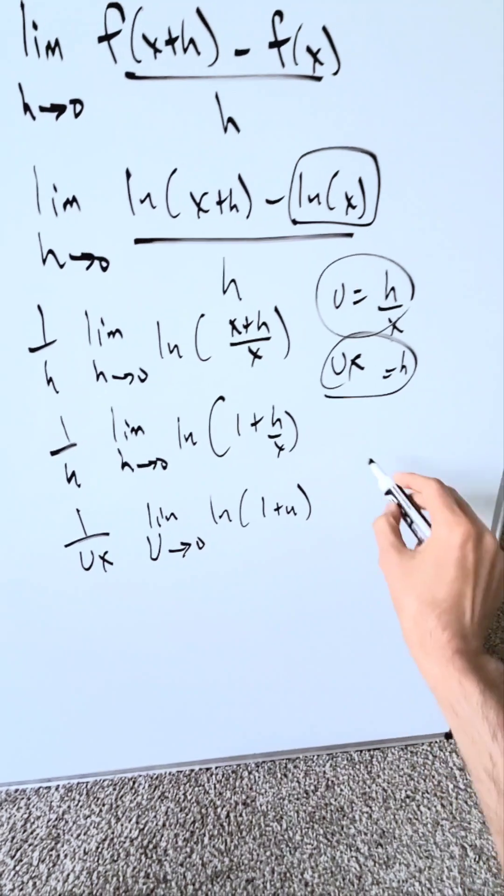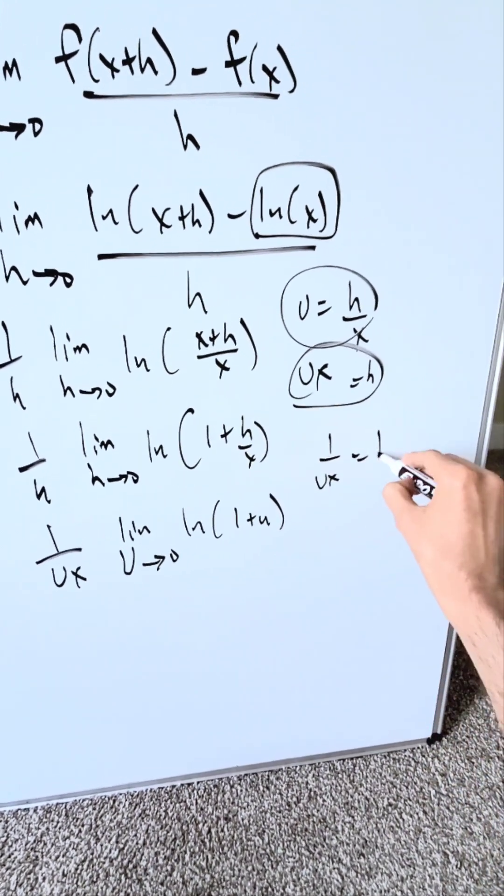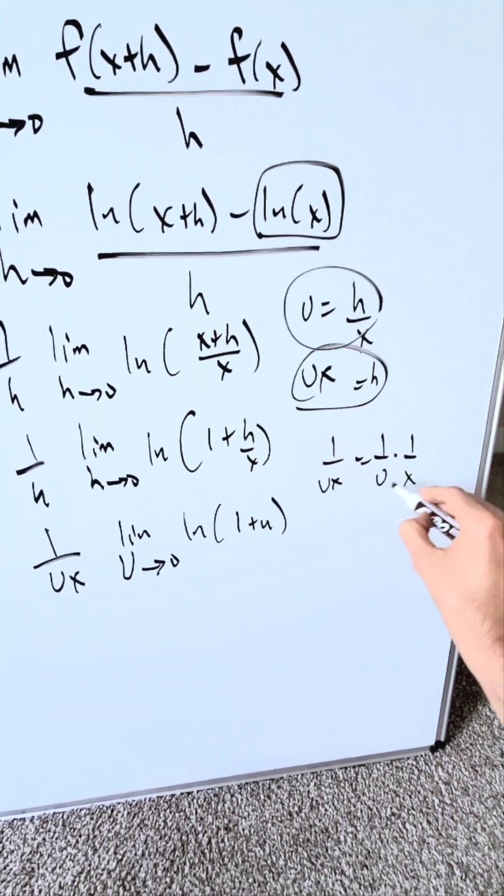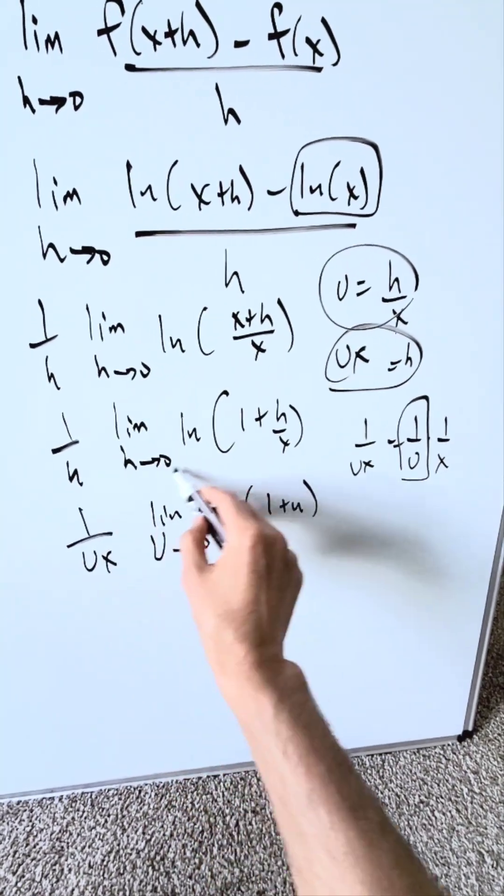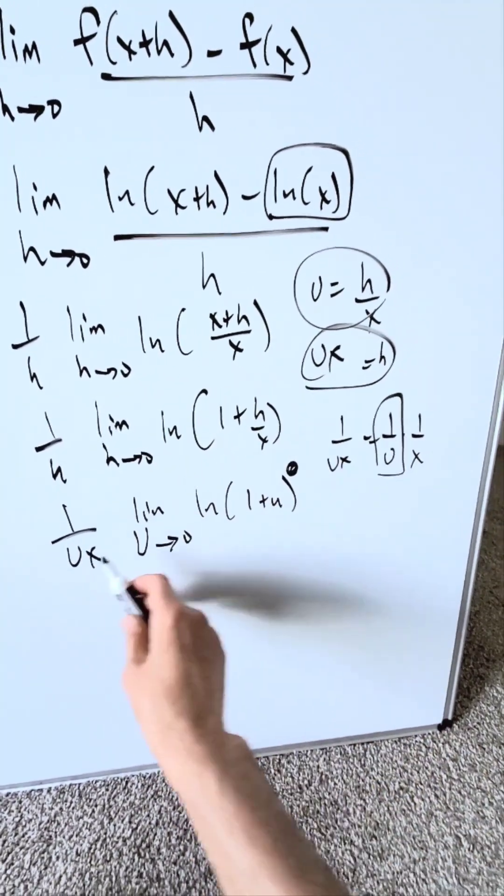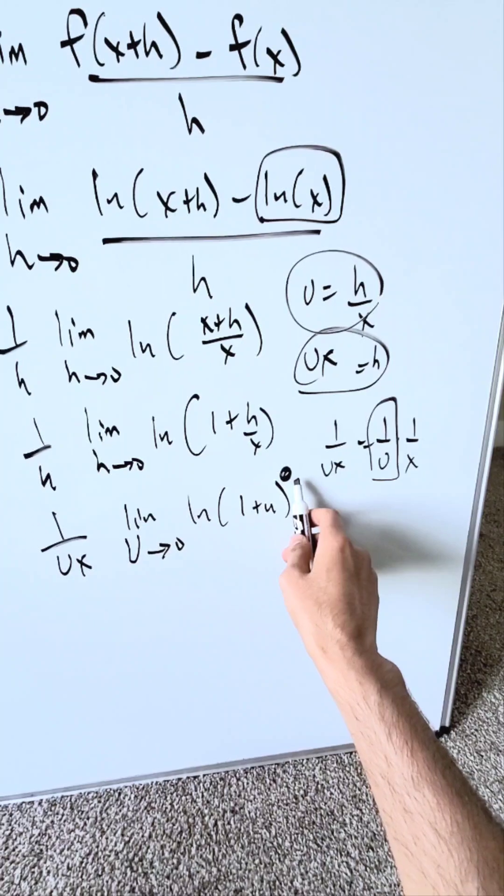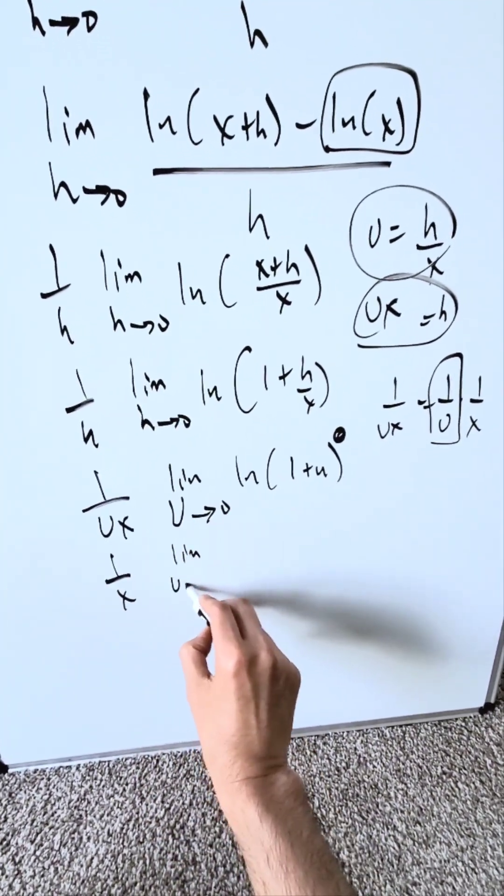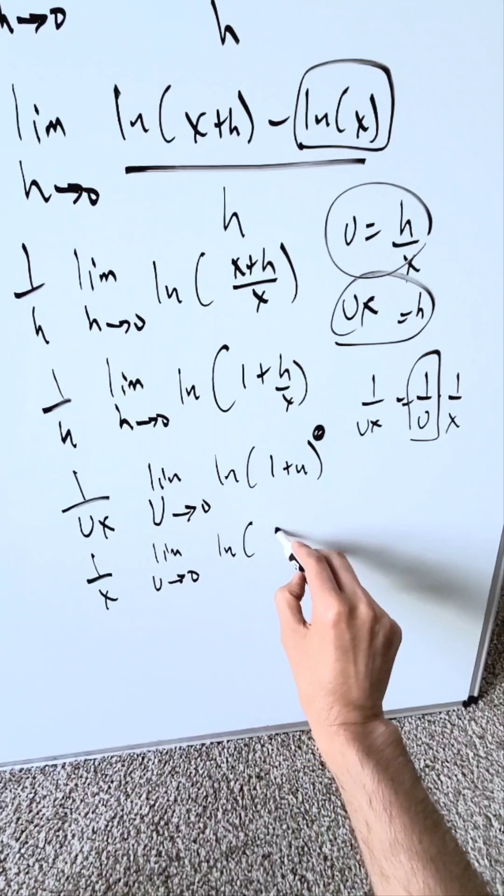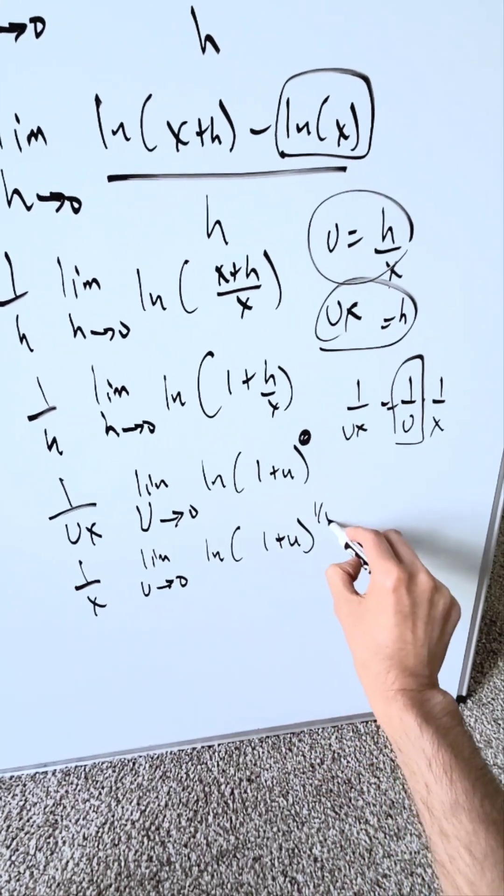Focus right here, 1 over u x. This is 1 over u x, which is no different than 1 over u times 1 over x. I'm going to manipulate this using my properties of logs. I'm going to transport that 1 over u right over here. A coefficient will become here an exponent. We have 1 over x, limit as u approaches 0, natural log 1 plus u to the power of 1 over u.